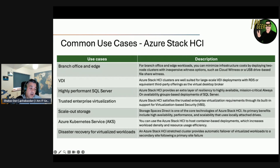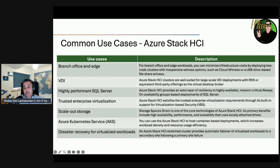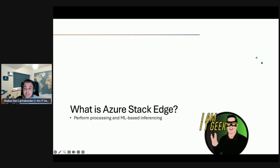For scaling out storage, Storage Spaces Direct is one of the core technologies of Azure Stack HCI. Its primary benefits include high availability, performance, and scalability using locally attached drives, resulting in significant cost reductions compared to SAN or NAS technologies. These benefits come from innovations such as persistent read-write cache drives, mirror-accelerated parity, nested resiliency, and deduplication. Azure Kubernetes Service (AKS) is another use case — you can host container-based deployments on Azure Stack HCI, increasing workload density and resource efficiency. Azure Stack HCI manages automatic failover of VMs serving as Kubernetes cluster nodes during physical component failures. Finally, for disaster recovery, Azure Stack HCI stretch clusters provide automatic failover of virtualized workloads to a secondary site following site failure, with synchronous replication ensuring crash consistency of virtual machine disks.